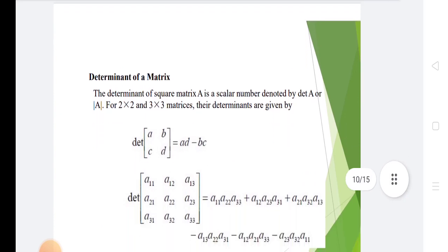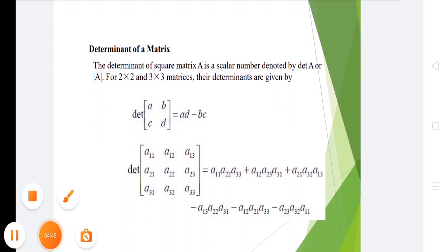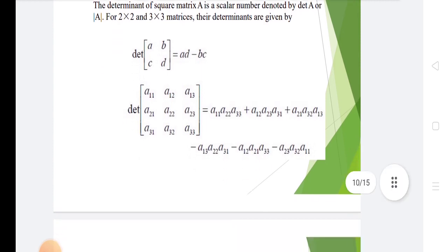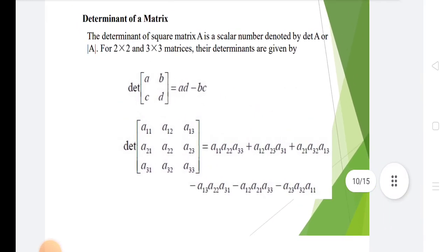In determinant of matrix, the determinant of square matrix A is a scalar number denoted by det A. For 2 by 2 and 3 by 3 matrices, their determinants are given by: determinant of [a, b; c, d] equals ad minus bc. Determinant of 3x3 matrix equals A11A22A33 plus A12A23A31 plus A13A21A32 minus A21A32A13 minus A31A22A13 minus A12A21A33.